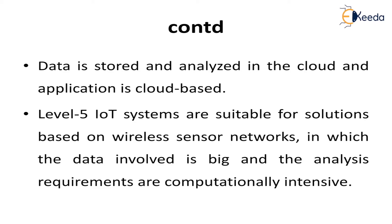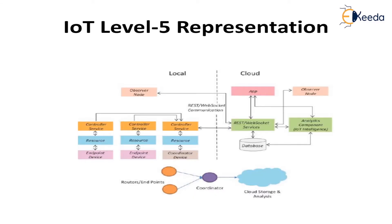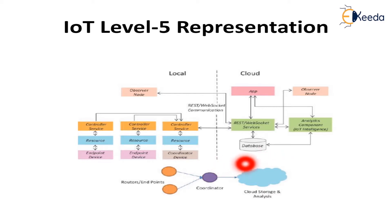Level 5 is best for solutions involving wireless sensor networks where data is large and computationally intensive analysis is required. In the architecture representation, it has routers and endpoints — multiple endpoints connected to a common coordinator node. The coordinator node processes the data which is then stored in cloud storage, and the analysis is performed in the cloud.